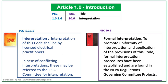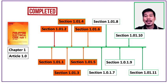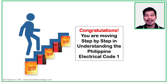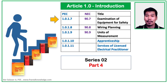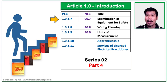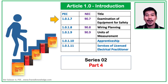NEC Section 90.6 says that interpretation was established through procedures under NFPA regulations regarding committee projects. We have now completed 6 sections, as you can see in the orange color. This Part 3 of Series 2 is really interesting as we proceed to another section — Sections 1.7 through 1.11 of Article 1.0. Congratulate yourself — you are moving step by step in understanding the Philippine Electrical Code 1. We need to move on to Part 4 for Section 1.0-1.7, Examination of Equipment for Safety; Section 1.8, Wiring Planning; Section 1.9, Units of Measurement; Section 1.0-1.10, Apprenticeship; and Section 1.0-1.11, Services of Licensed Electrical Practitioner.